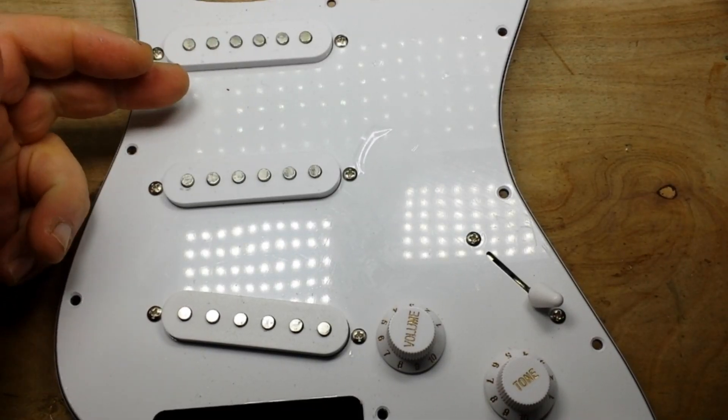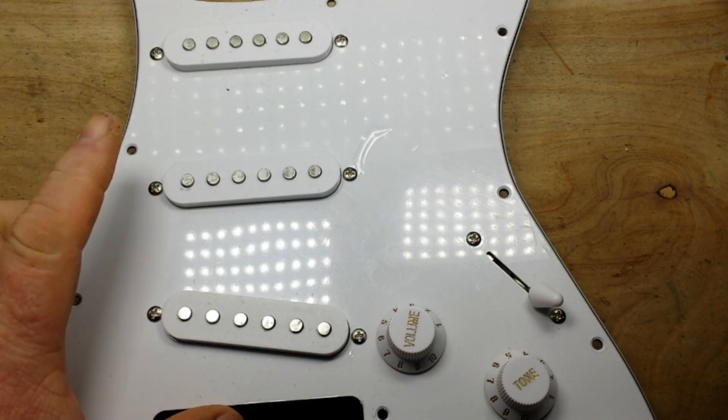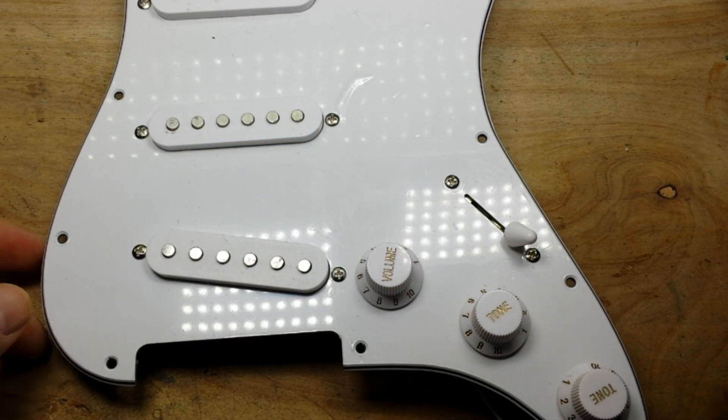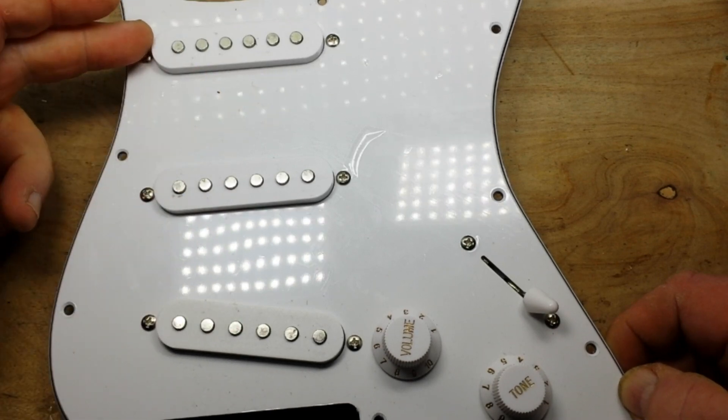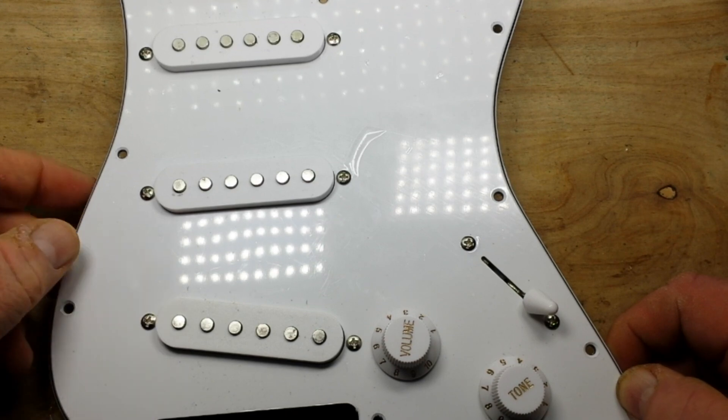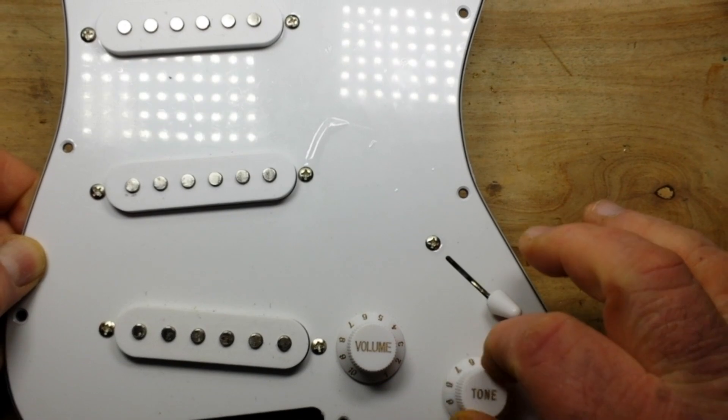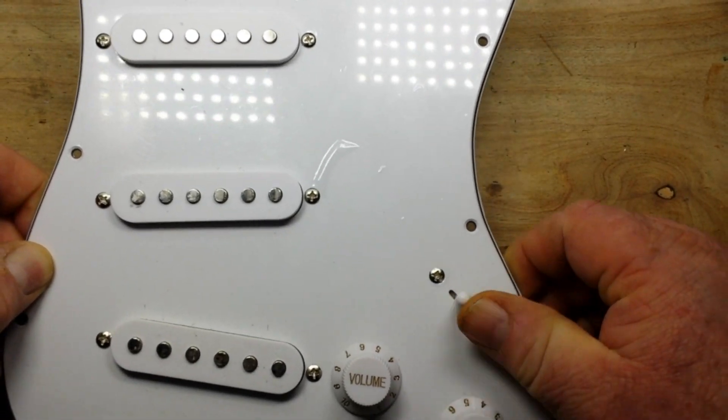What we're going to talk about mainly today are the single coil pickups and your basic Stratocaster setup. So we're going to take a look at all this. Your Stratocaster has three pickups: the neck pickup, the middle pickup, and the bridge pickup. You have a volume, you have two tone controls.